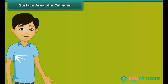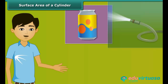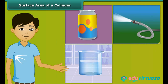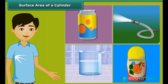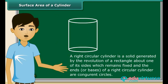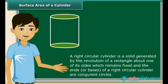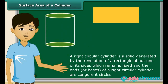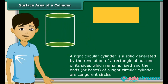You must have come across many solids like tin cans, water pipes, beakers in the laboratory, and powder boxes, which are right circular cylinders. A right circular cylinder is a solid generated by the revolution of a rectangle about one of its sides which remains fixed, and the ends or bases of a right circular cylinder are congruent circles.